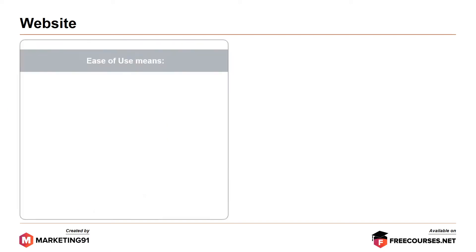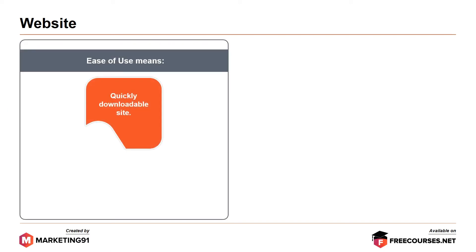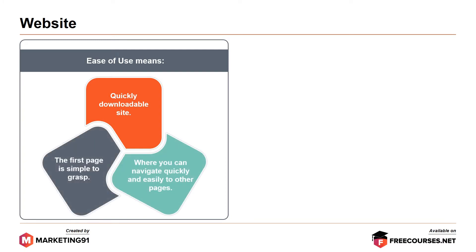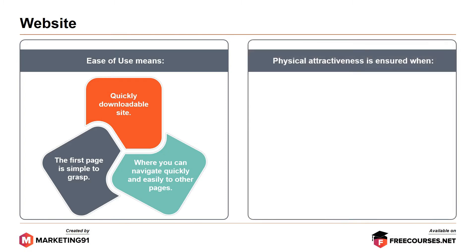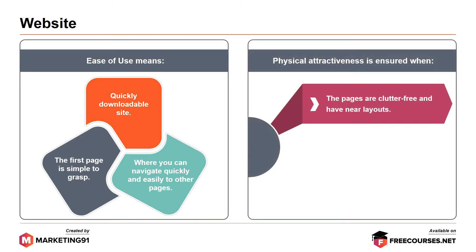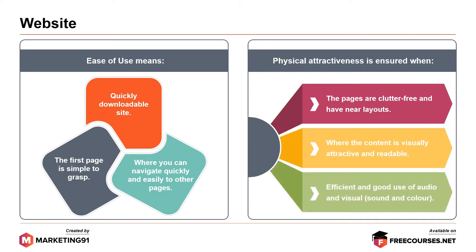When it comes to a website, ease of use means it should be a quickly downloadable site, where you can navigate quickly and easily to other pages, and finally the first page is simple to grasp. Physical attractiveness is ensured when the pages are clutter-free and they have neat layouts, where the content is visually attractive and readable, and finally efficient and good use of audio and visual, that is sound and colour.